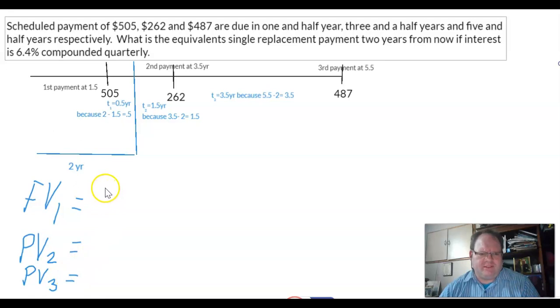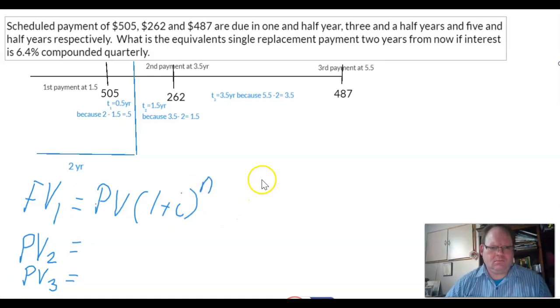So the future value equation is PV(1 + i)^n. Before I move on to the other two equations, let's talk about i and n.